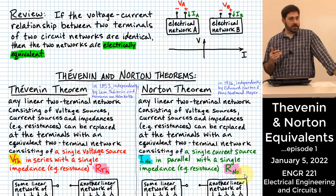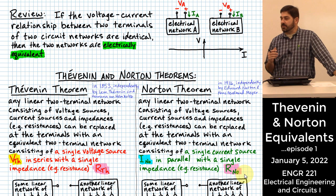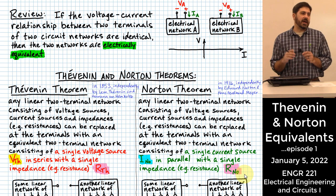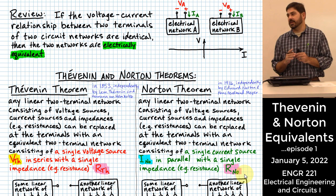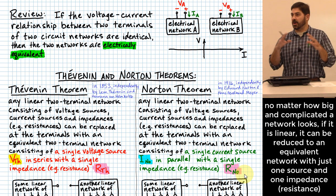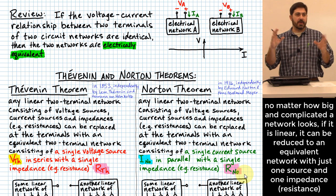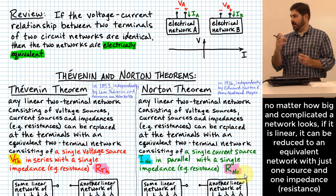Today we're going to talk about Thevenin and Norton equivalent circuits. This technique is instructive because it allows us to see that no matter how complicated a circuit network becomes, as long as it's linear, we can reduce it essentially to just one source and one resistance. Even if it looks all messy and hairy, as long as it's a linear circuit, it can be reduced to a single source and a single resistance.